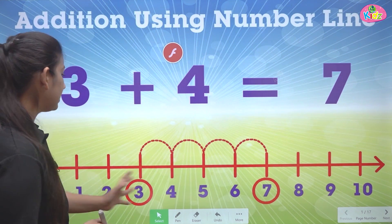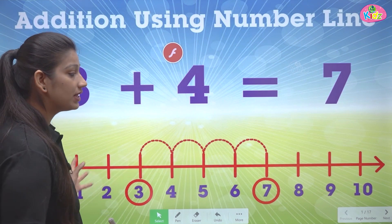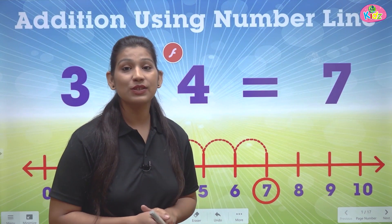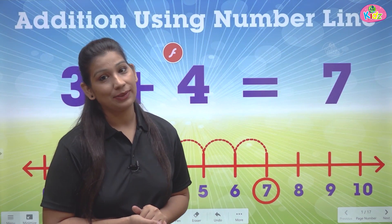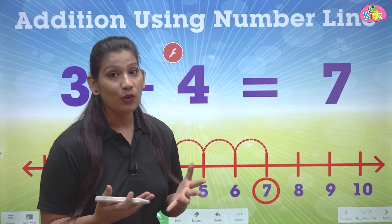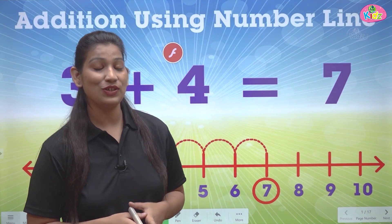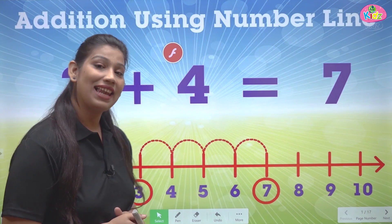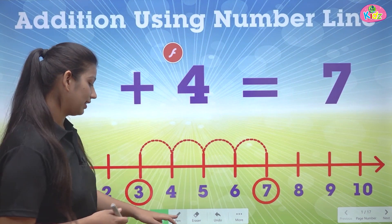Here you can see a number line from 0 to 10. This is called a number line. You know, we can also do addition on the number line. Let me tell you how to do that.